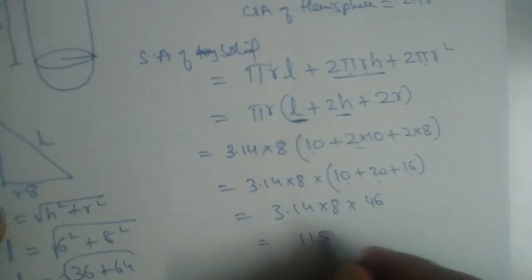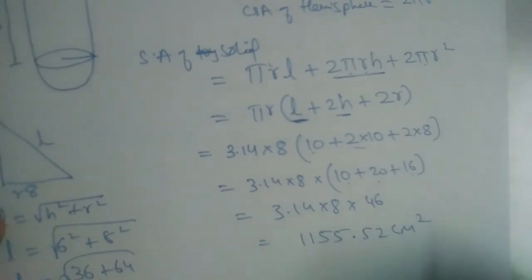This will give us 1155.52 centimeter square. So total surface area of the solid is 1155.52 cm².